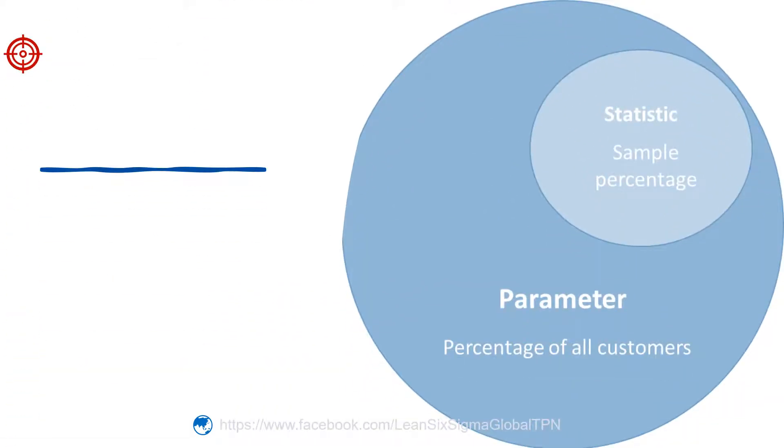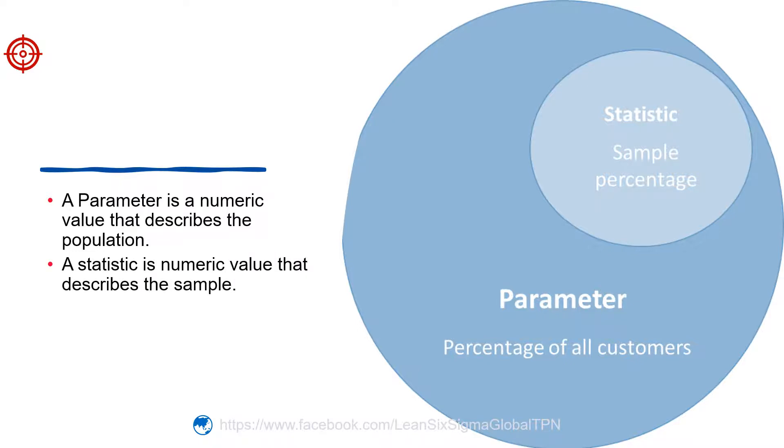We need to distinguish between numbers that describe the population and the numbers that describe the sample. A parameter is a numeric value that describes the population. A statistic is a numeric value that describes a sample.